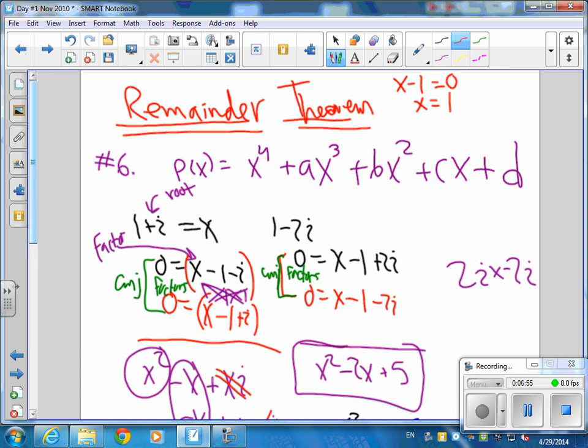Now, if that remainder is 0, we know it's a factor. So apparently, if you put a 1 plus i in for x, and you did all that work, you would get the remainder of 0 every single time. But certainly don't do that, because that would be a horrible thing to do.